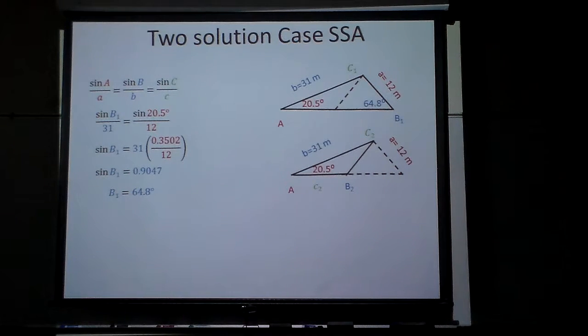So let's go ahead and find C1, which would be that 180 minus the 64.8 minus 20.5, right, to find the third angle, which is 94.7.